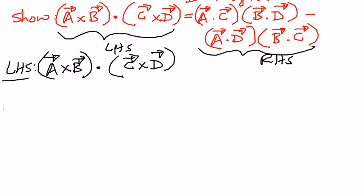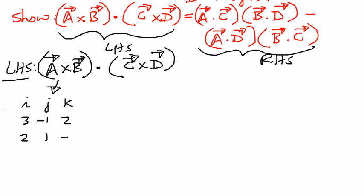For a cross b, we're going to use matrices — we'll take the determinant of the components of these vectors. For vector a, the coefficient of i is 3, the coefficient of j is negative 1, and the coefficient of k is positive 2. For vector b, the coefficient of i is 2, the coefficient of j is 1, and the coefficient of k is negative 1. We're going to find the determinant of this.